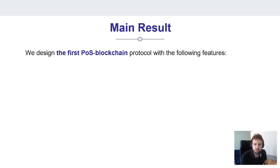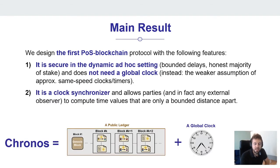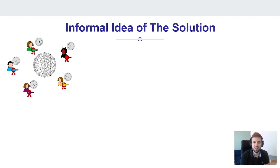We designed the first PoS blockchain protocol with the following features: it is a secure PoS protocol in the dynamic ad hoc setting and does not need a global clock or reliable timing information. Instead, it synchronizes itself on time based only on the assumption of approximately same speed clocks or duration timers. Second, the protocol is a clock synchronizer — any party or external observer can use it to compute time values that are only a bounded distance apart. We call the protocol KRONOS, and it is a combination of a ledger plus a global clock.